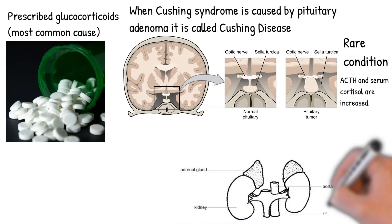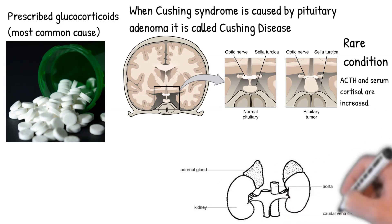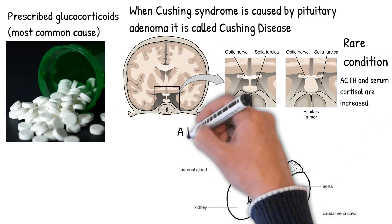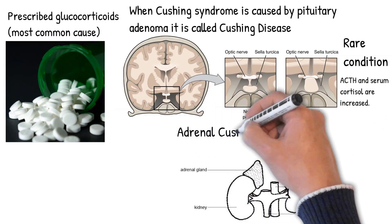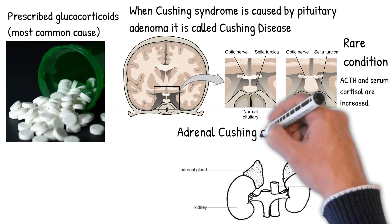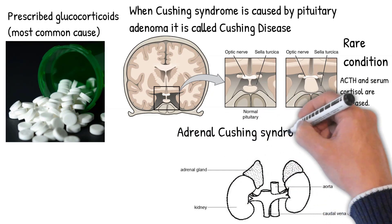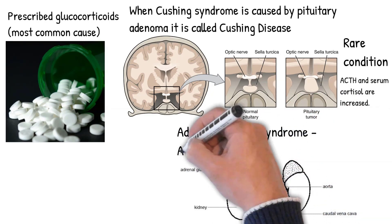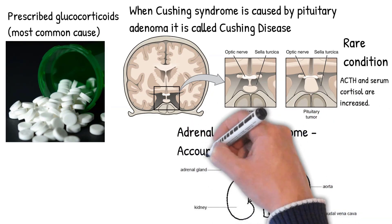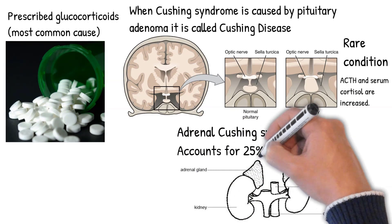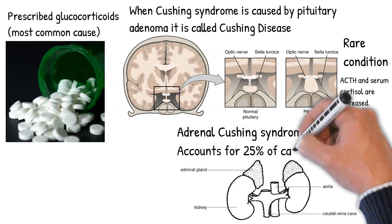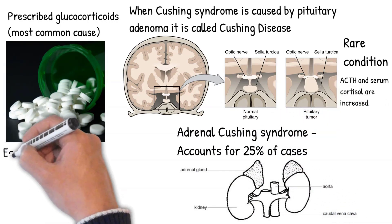Adrenal Cushing's syndrome accounts for 25% of cases of Cushing's syndrome, most often caused by an adenoma arising in the adrenal cortex. The increase in serum cortisol causes a decreased synthesis and release of ACTH by negative feedback.